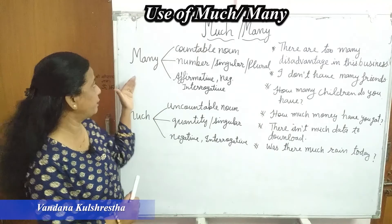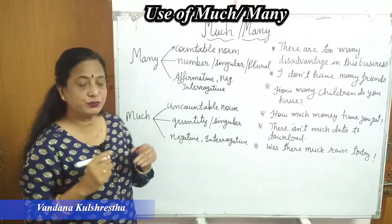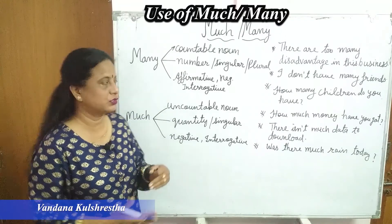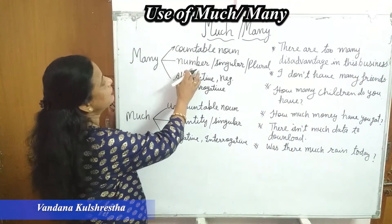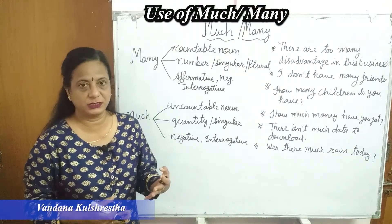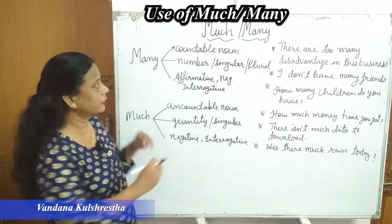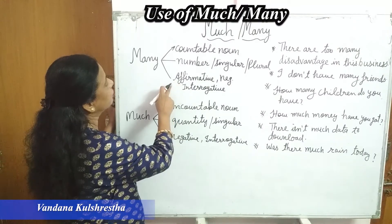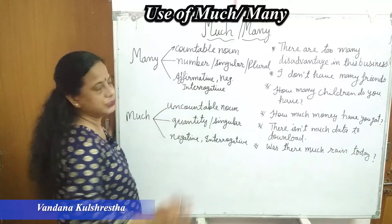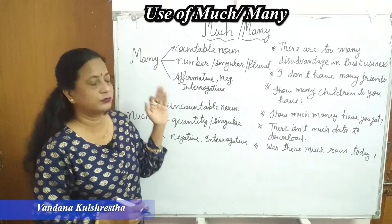First of all, we are talking about 'many'. Many is used for countable nouns — countable nouns ke saath we use many. Countable noun means separate objects that we can count. It is used for number — matlab koi bhi cheez quantity mein kitni hai. It may be singular or plural, both. And we use it in affirmative, negative, and interrogative sentences — especially negative or interrogative usually.